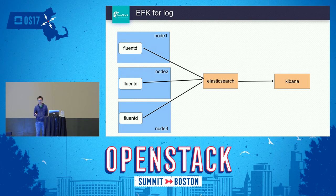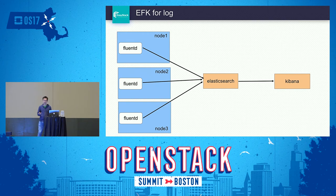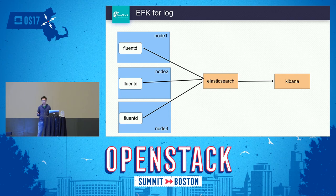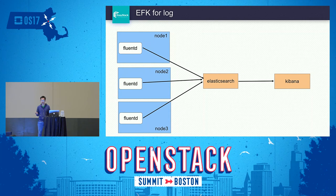Next is log collection and search. We use Fluentd, Elasticsearch, and Kibana. Fluentd runs as a DaemonSet on each node and is responsible for collecting container logs. The data is stored in Elasticsearch, and users can search any logs they want. Kibana is used to display the log information.